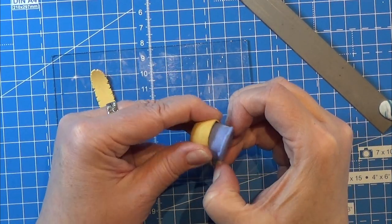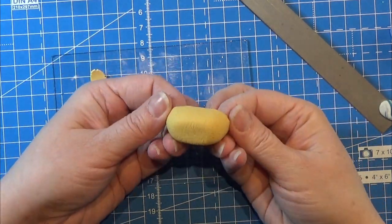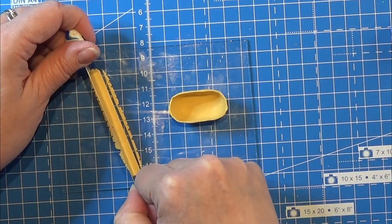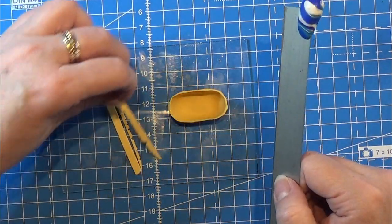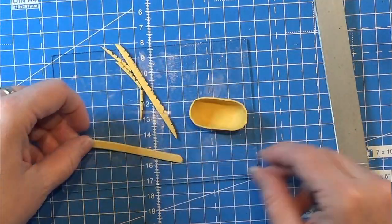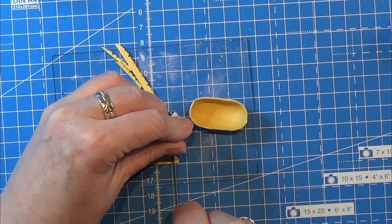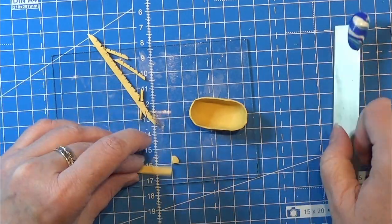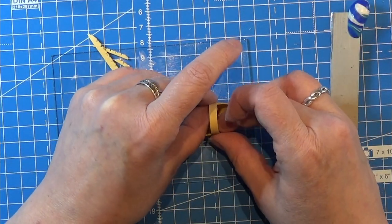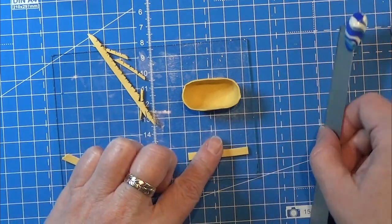When it has baked and cooled down I am taking the little basket off the mold and I am going to make a simple handle. I'm just cutting out a strip of the clay here in the length that I think is good for the handle.